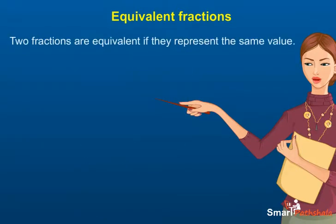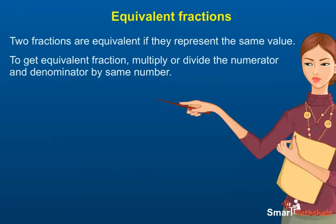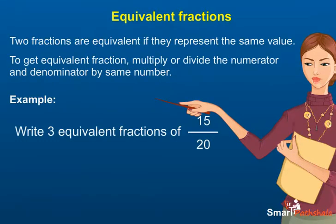Two fractions are equivalent if they represent the same value. We can get equivalent fractions by multiplying or dividing the numerator and the denominator by the same number. Example: write three equivalent fractions of 15 upon 20.